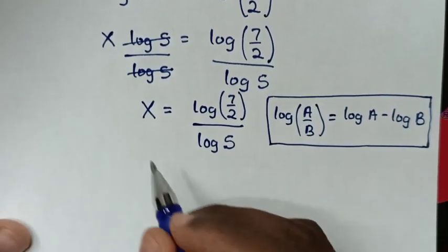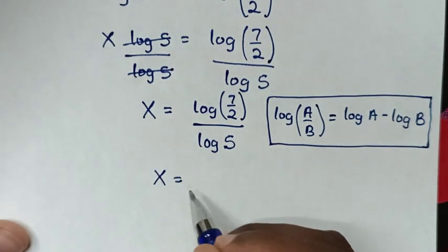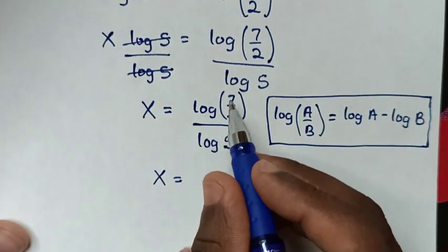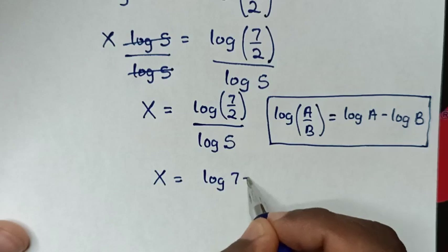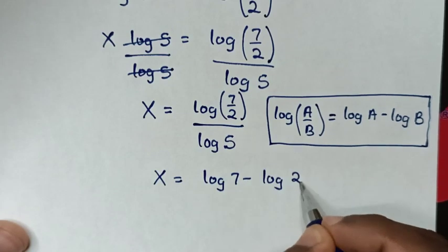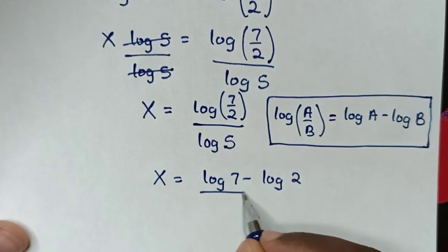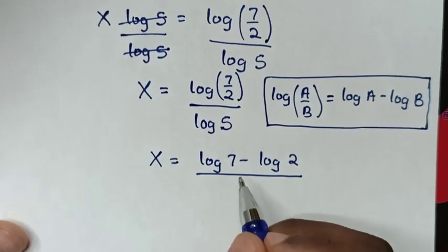Then it will be x is equal to log of 7 over 2, which is the same as log of 7 minus log of 2, then over log of 5.